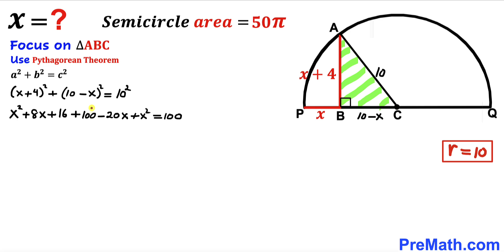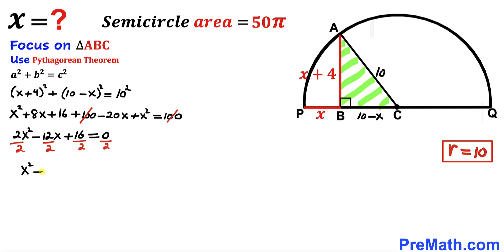The 100 on both sides cancels. Combining like terms on the left gives 2x² − 12x + 16 = 0. This equation is divisible by 2 across the board, so dividing every term by 2 gives x² − 6x + 8 = 0.